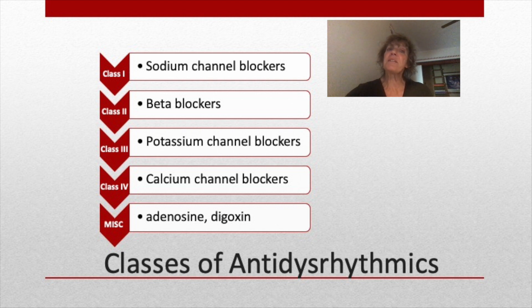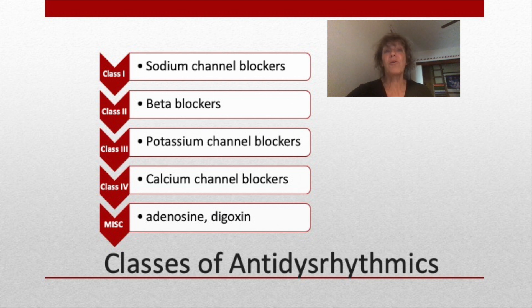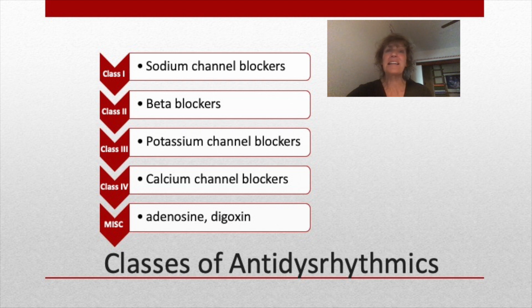Drugs for dysrhythmias are grouped according to the stages in which they affect the action potential. These drugs fall into four main categories: class one, class two, class three, and class four. There is a fifth group that doesn't act like any of these four; the main drugs in this group are adenosine and digoxin, which will be reviewed in another lecture.